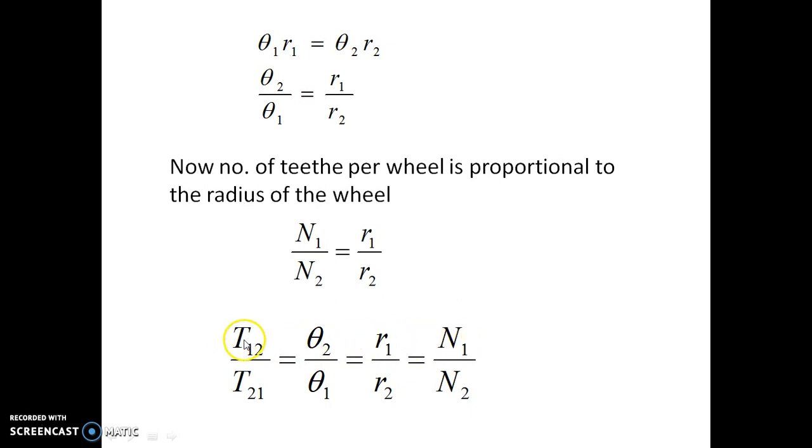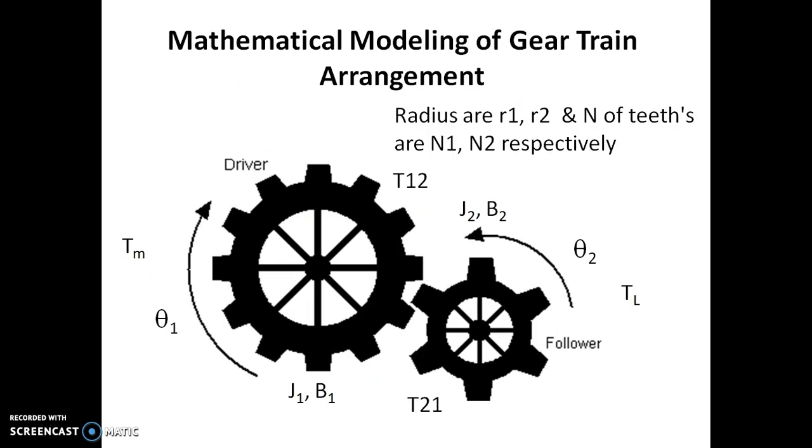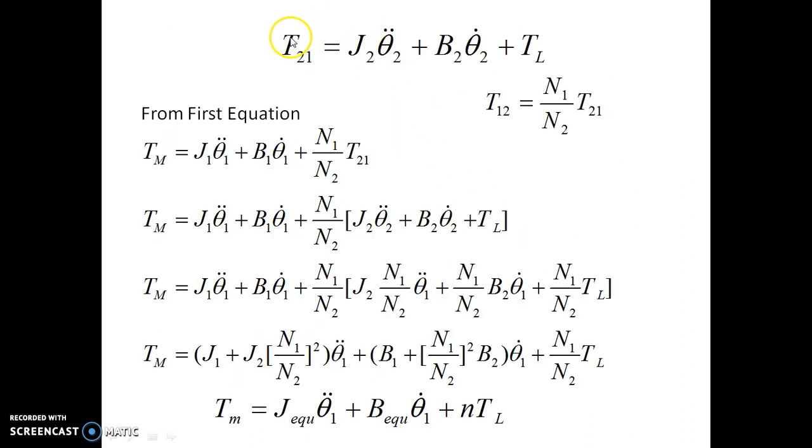Now we can get the load torque on the shaft - what is the actual torque the gear train arrangement is providing on the shaft. When there is an intermediate torque experienced by the second wheel T21, it will make the wheel rotate by theta2 angular displacement, which will be opposed by the inertia coefficient J2 and viscous frictional coefficient B2. So now we can write a torque equation: T21 minus J2*theta2_double_dot minus B2*theta2_dot equals TL.